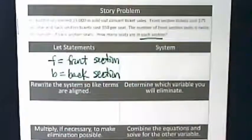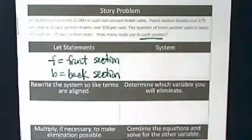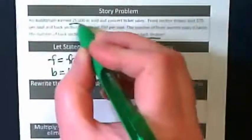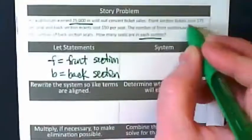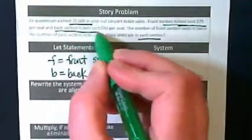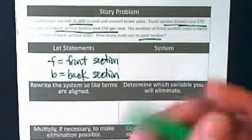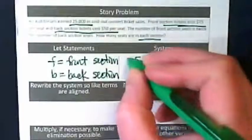Now let's go through this again and figure out what our two equations would be. An auditorium earned $25,000. Front section tickets cost $75. How much do back section tickets cost?